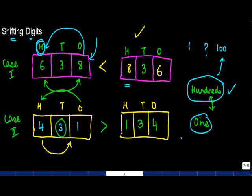In this case, eight is greater than six. Therefore, the moment I move its value from ones to hundred, it becomes eight hundred. So I increase the number of hundreds from six to eight, and therefore the resulting number is greater.